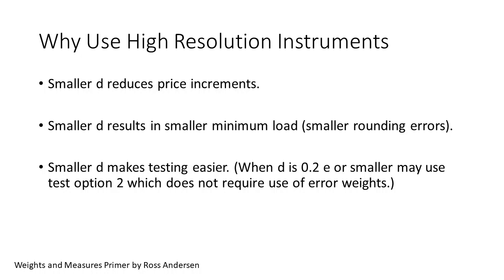Going back to the reasons to have high resolution, we see all three come into play with class 3L. Smaller D means smaller price increments, which I believe was the prime reason for having smaller D pre-1984. Smaller D means smaller minimum loads, as discussed earlier. And finally, smaller D permits the use of test option 2 with no error weights. This is a real revelation, as NTAP is playing with two-pound error weights where there is no need. The smaller D also facilitates strain load and substitution testing, since you are always resolving errors to one-fifth of the real tolerance. The key is to recognize class 3L as high-resolution class 3 instruments.